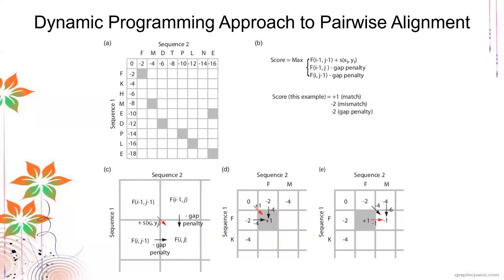Continuing our topic on pairwise alignment, let's look at how this algorithm works to find the optimum alignment of sequences. They do this by first arranging the two sequences in a matrix. You can see here your matrix with the score of each cell. The first column is the sequence score, and this is for the global alignment. The uppermost left is set as zero — a fixed value for the global alignment.